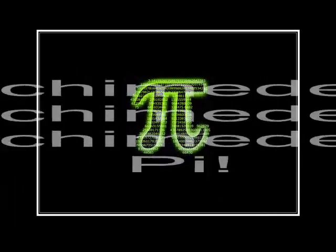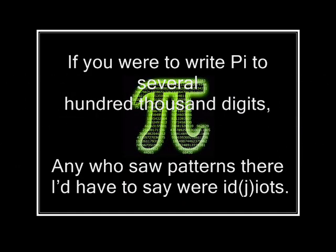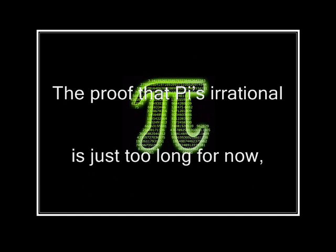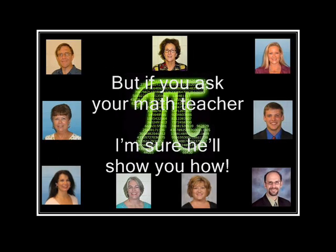Archimedes, Archimedes, Archimedes Pie. Archimedes, Archimedes, Archimedes Pie. If you were to write Pi to several hundred thousand digits, any who saw patterns there I'd have to say were idiots. The proof that Pi's irrational is just too long for now, but if you ask your math teacher I'm sure he'll show you how.